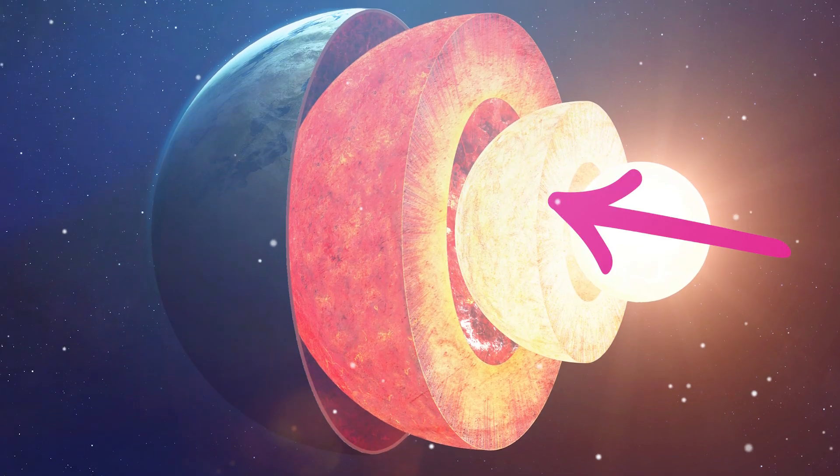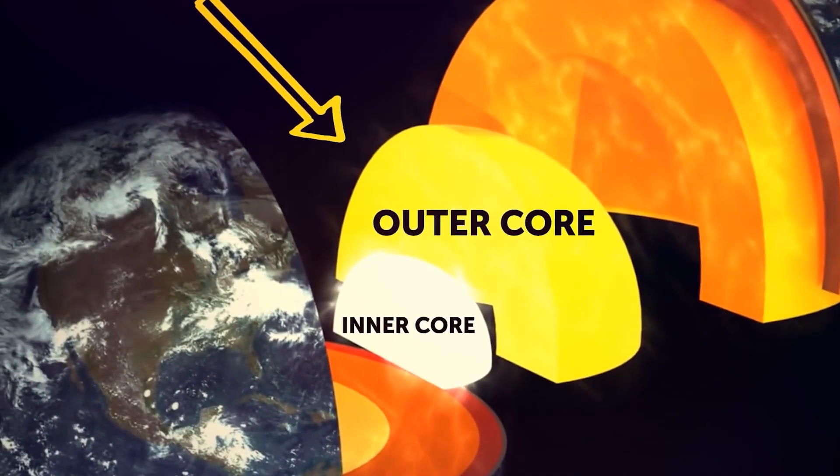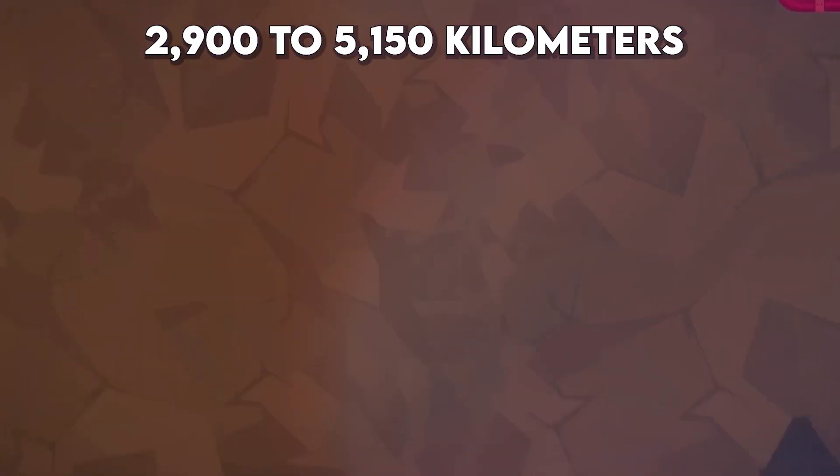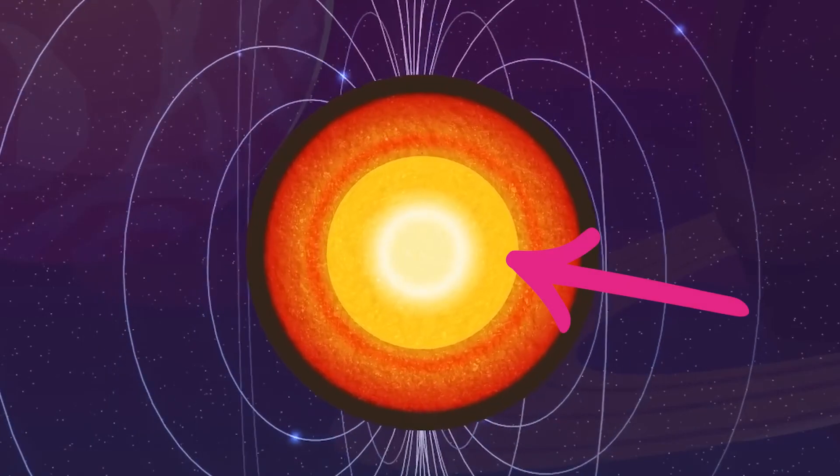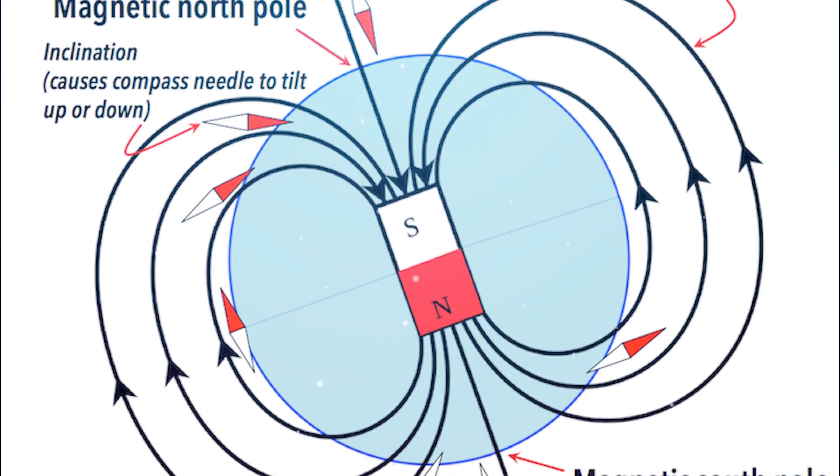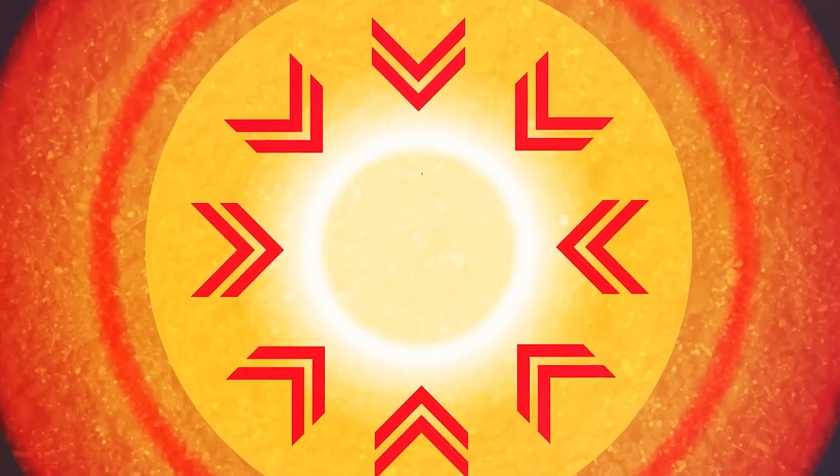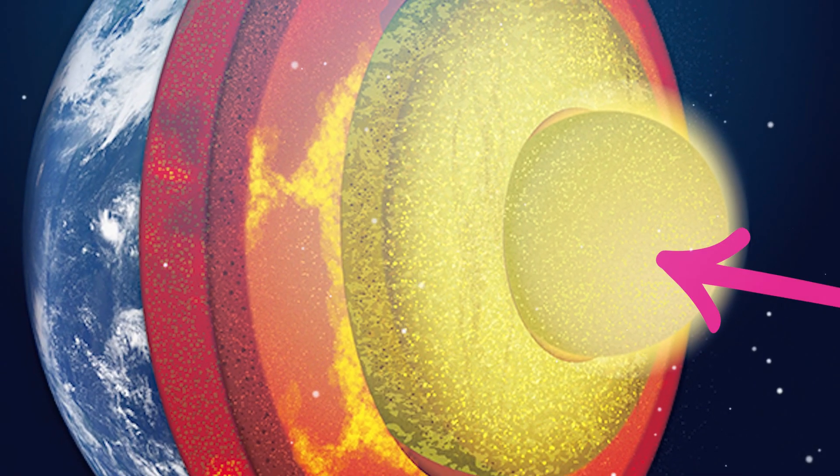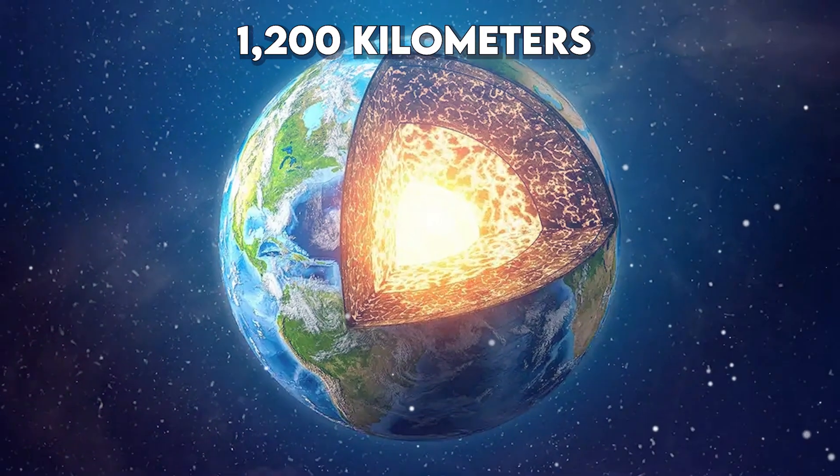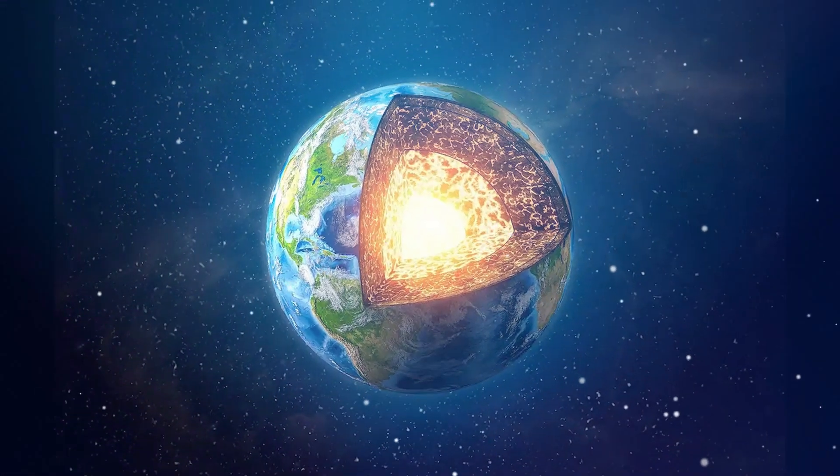Now, if you thought the mantle was playing it cool, wait till you meet the Earth's outer core. This layer, located from about 2,900 to 5,150 kilometers down, is what gives us our magnetic field—the invisible force that makes compass needles point north. And finally, at the very center, we hit the Earth's inner core. This tiny but mighty core, around 1,200 kilometers in radius, is where things get seriously intense.